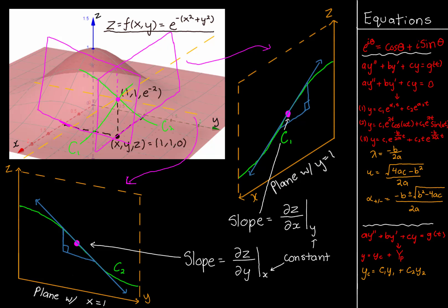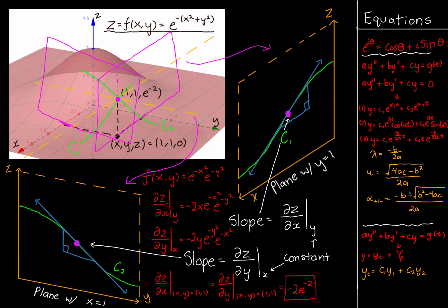We look at the tangent lines to curves C1 and C2 at this point, and the slope of these tangent lines is itself the partial derivative. The partial derivative along the xz plane along this tangent line is ∂z/∂x where y is kept constant. For the yz plane at the pink point (1, 1, e^(-2)), ∂z/∂y gives the slope where x is kept constant. To find the actual value algebraically, we have f of x y equals e to the negative x squared times e to the negative y squared, splitting up the exponent.